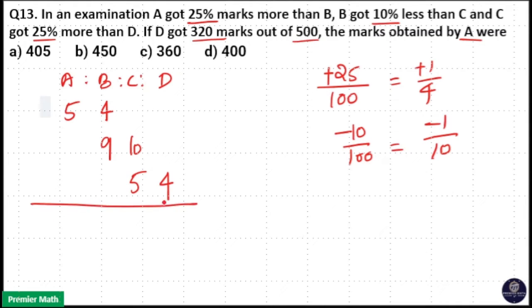So when you calculate, 5 will come here, 5 will come here, 9 will come here, 10 will come here, 4 will come here, 4 will come here.